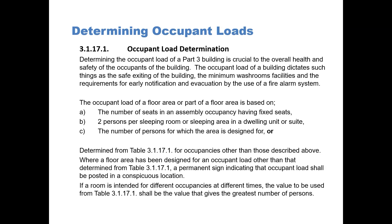The occupant load of a floor area or part of a floor area is based on: A, the number of seats in an assembly occupancy having fixed seats; B, two persons per sleeping room or sleeping area in a dwelling unit or a suite; C, the number of persons for which the area is designed for; or they can be determined from Table 3.1.17.1 for occupancies other than those described above.